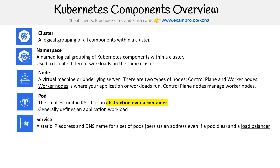The next is service. A service is something we use with a pod to give it a static IP address or a DNS name for a set of pods. The idea is that if a pod dies — because pods get dynamic IPs — we want them to have static IPs, and that's the purpose of the service. The service is also utilized as a load balancer.